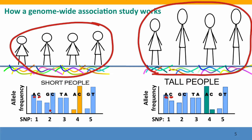We do this at every SNP position we've studied. At position two, again the short people and the tall people have the same allele frequencies. Same at position three, same at position five. But at position four — bingo — we've found a position where short people and tall people differ. About 90% of the short people have the C allele, whereas only about 10% of the tall people have C — 90% of the tall people have the A allele. This flags a position that could be contributing to the difference in height.